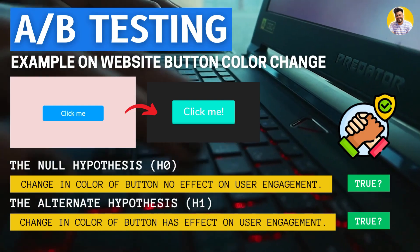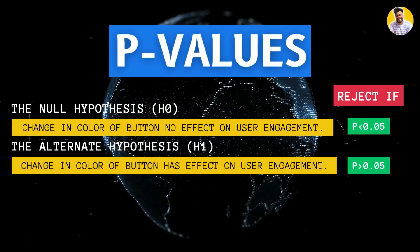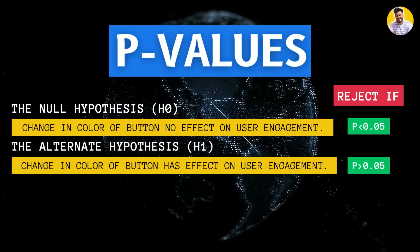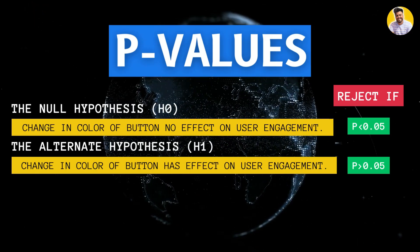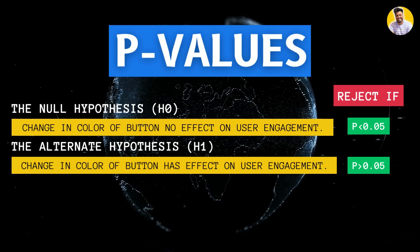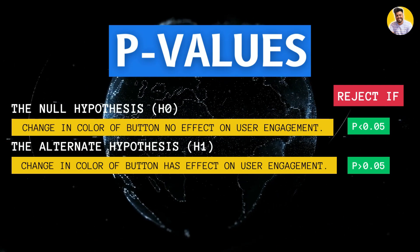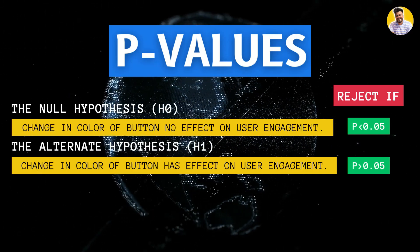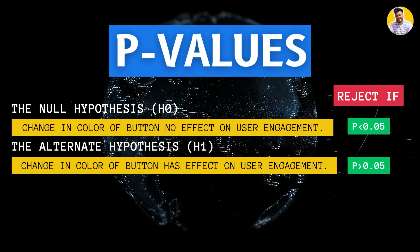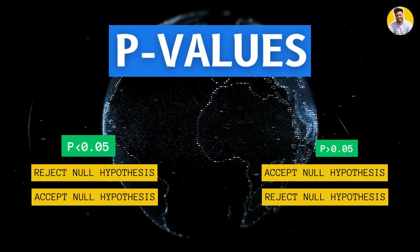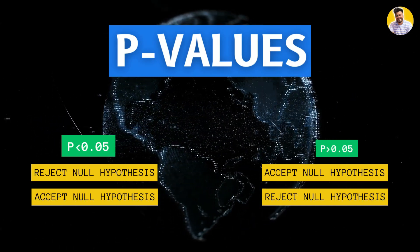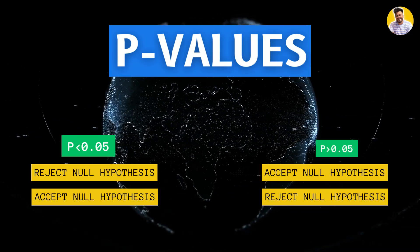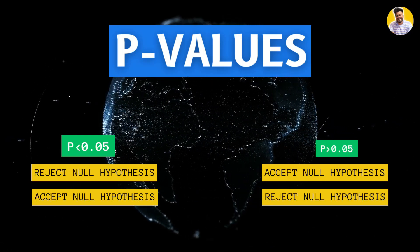Here we introduce p-values. P-values are used in hypothesis testing to measure the strength of evidence against the null hypothesis, because in hypothesis testing we aim to reject the null hypothesis to get our desired result. A low p-value suggests stronger evidence against the null hypothesis, while a high p-value suggests weak evidence against it. The threshold for the p-value is always set to 0.05.